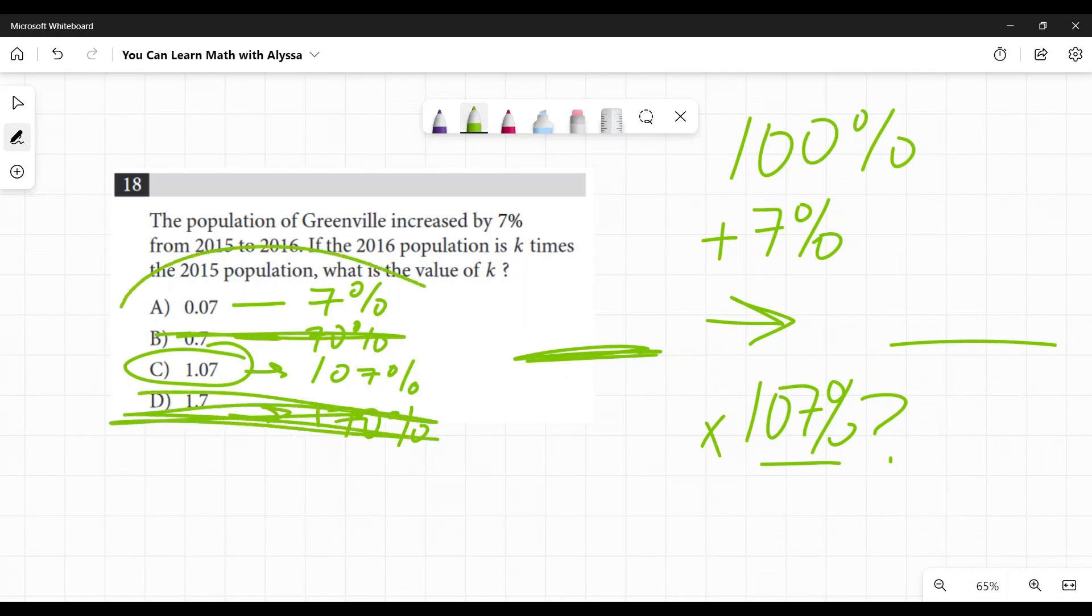So if I multiply by 7%, am I getting bigger? No, that's just asking what is 7% of Greenville. Well, if I multiply by 107%, I am going to be increasing that. I'm going to get the final number. I don't have to do any adding later.